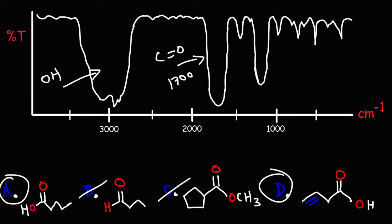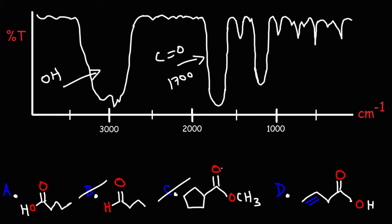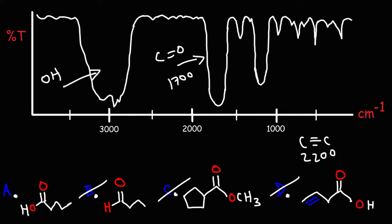The difference between choice A and D is the presence of the triple bond. It's important to know that the C≡C stretch occurs at 2200. We don't have any signal at 2200, therefore we could eliminate answer choice D. So we can say that this particular graph corresponds to answer choice A.